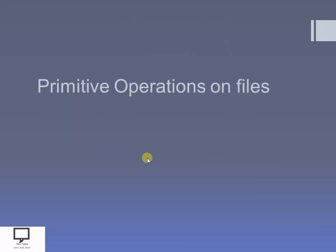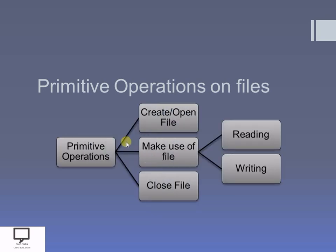Now let's start with the primitive operations. What do we mean by primitive operations? Primitive operations are useful to handle files. They are: to create a file if it does not exist, then after creating a file we can perform different operations, and at the end we will close the file. If the file already exists, we can open the file and make use of it by performing operations like reading or writing. These are the primitive operations we can perform on a file.